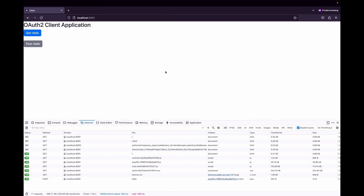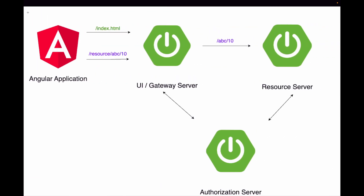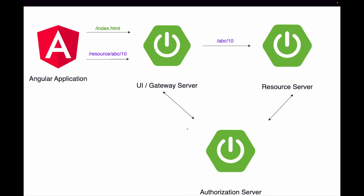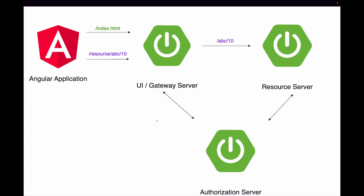That's how we serve the Angular application from the OAuth2 client server, completing this architecture. This is how OAuth2 is used with single page applications. There is an alternative approach without the gateway server — where Angular gets the access token directly from the authorization server and sends it to the resource server — but that is not covered in this playlist. This may be the last video of the playlist, but perhaps more videos will follow. Thank you for watching, keep learning, bye.